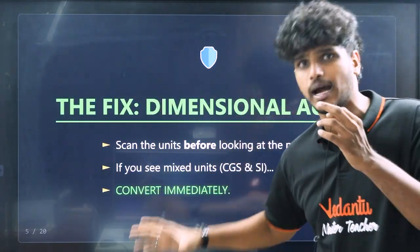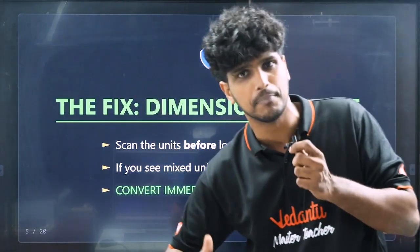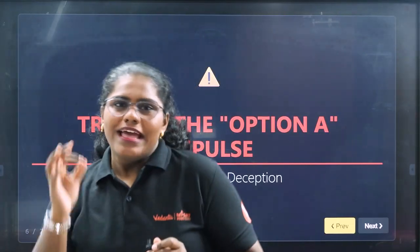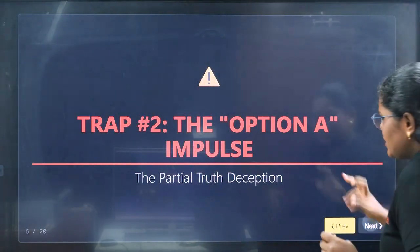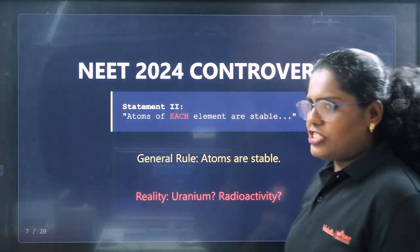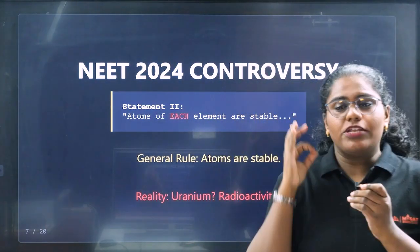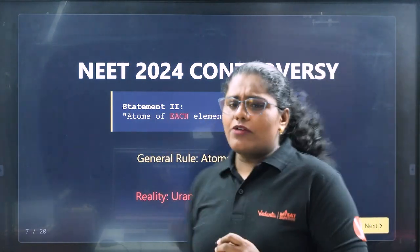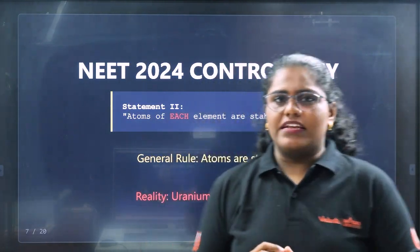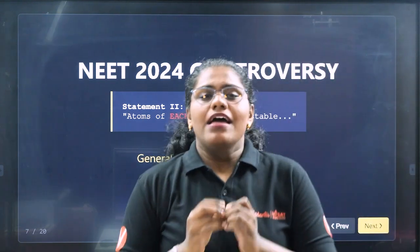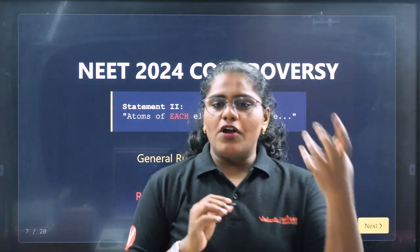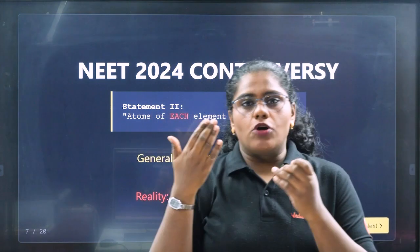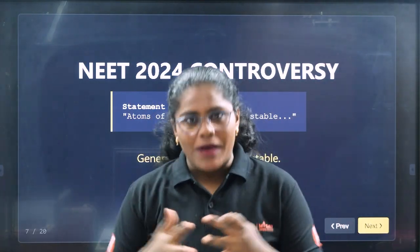Trap number 2 is Impulsive Optioning. If you have a question — especially a controversial one from 2024 — read carefully. For example: Statement 1 says atoms have the same number of electrons and protons, so positive and negative charges balance.